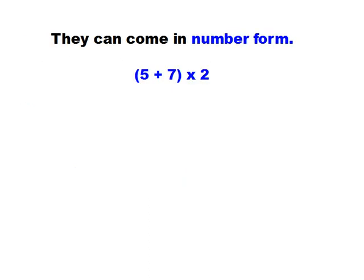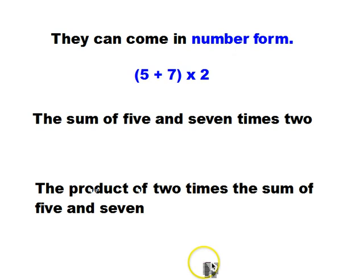Expressions can come in number form too, and here we're looking at the sum of 5 plus 7 times 2. Is there more than one way I could write this? Yes, there is. What you're going to see is that one gives much clearer directions to the person working with the expression than the other. The first one I did was the sum of 5 and 7 times 2.